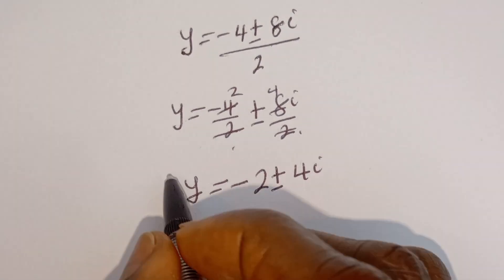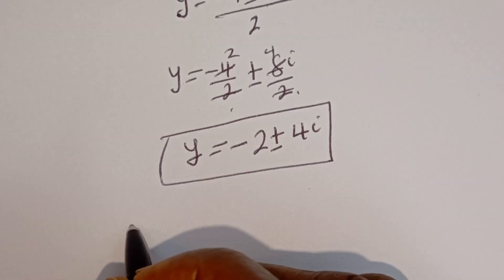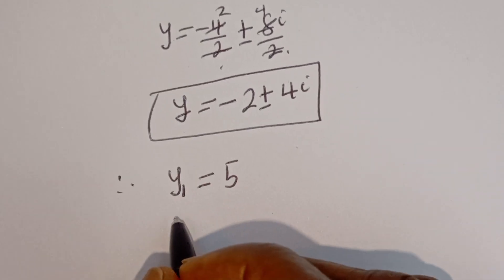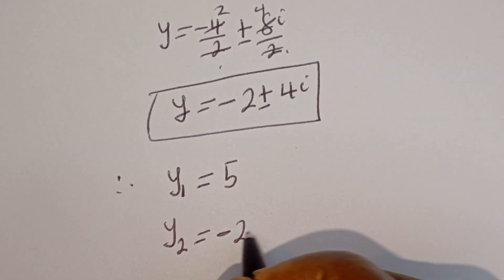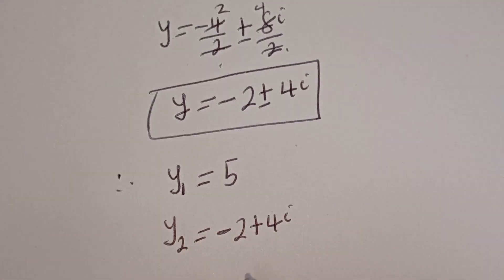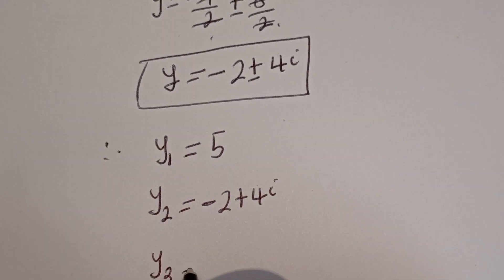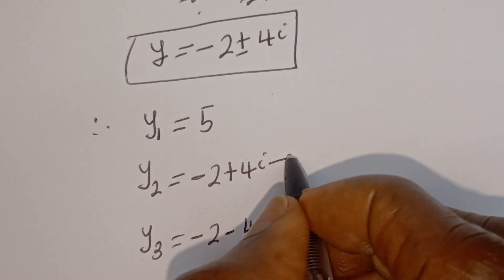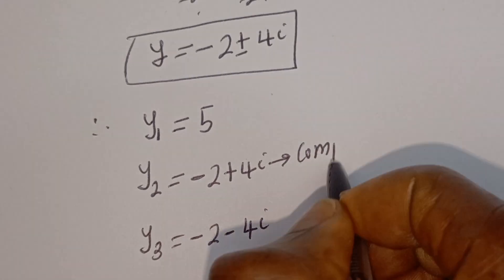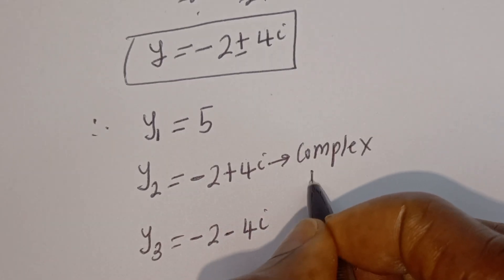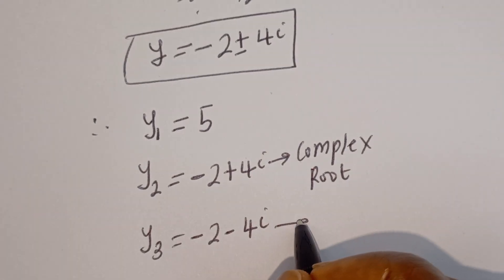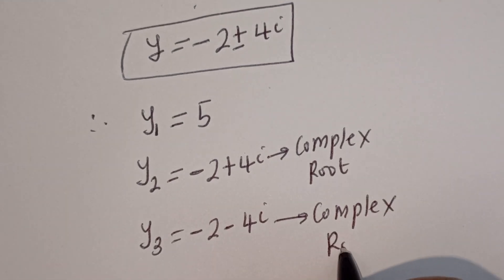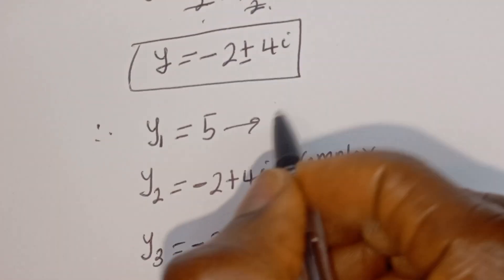Therefore our final answers are: y₁ is equal to 5; y₂ is equal to minus 2 plus 4i; and y₃ is equal to minus 2 minus 4i. The second and third roots are complex roots, so y₁ equals 5 is the only real root.